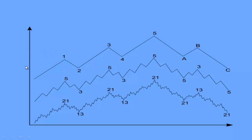This entire chart is going to be Wave 1, Wave 2, Wave 3, Wave 4, Wave 5, and then Wave A, Wave B, and Wave C. So this is going to be impulse, correction, impulse, correction, impulse, and then this is an impulse correction and this is an impulse.